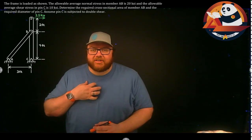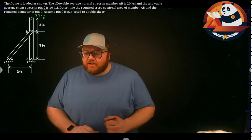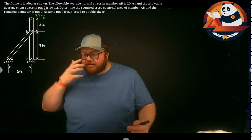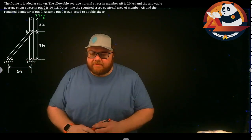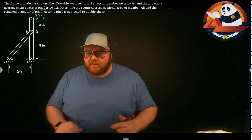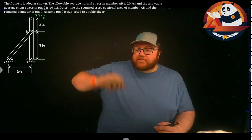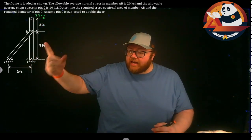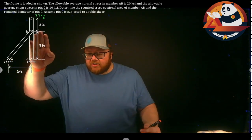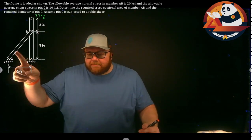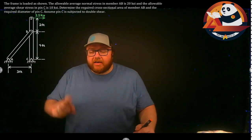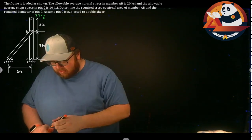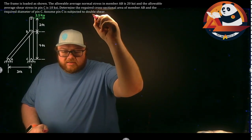Welcome everyone, I'm JJ. Let's tackle an example problem. We have a frame loaded with a 2.5 kip force at the top. There's a pin at C, a two-force member at AB, and a thin weightless link. We know the allowable average normal stress in AB is 20 KSI and the allowable average shear stress in pin C is 10 KSI. We need to find the required cross-sectional diameter of member AB and the required diameter of pin C, assuming pin C is subjected to double shear.